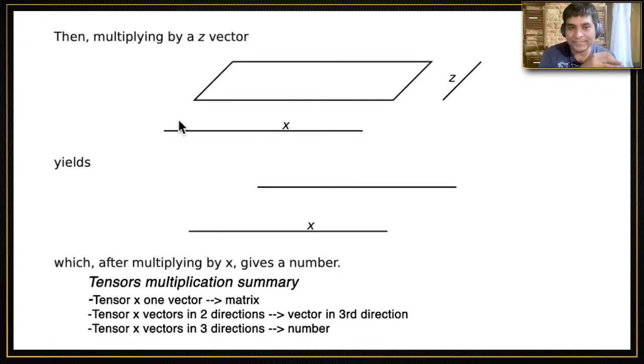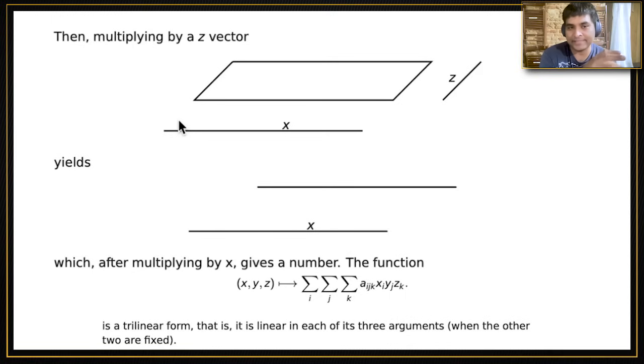If none of that made sense and you're algebraic, I've written down the function that the tensor induces in algebraic terms. The good news is that the order in which the vectors are multiplied by the tensor does not matter. I could have multiplied by z first instead of y, and it would have given me the same equation. That's all there is about tensors.